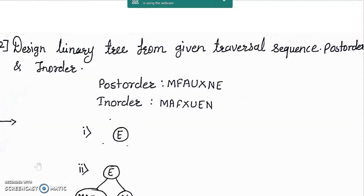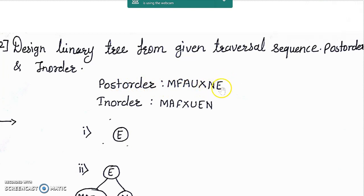Now we will see the first example of designing a binary tree from given post-order and in-order traversal sequence. Consider the post-order and in-order traversal sequences given to you. Our first job is to find the root node of the tree. To find the root node we use the post-order traversal sequence. As we know the root comes last in post-order traversal, so from this given sequence we can easily find that 'e' is the root node of the tree.